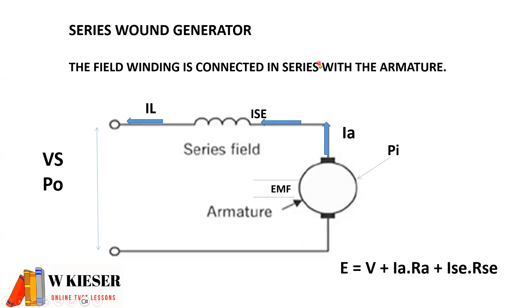For the series-wound generator, the field winding is connected in series with the armature. For a generator it's mechanical in and electrical out. For calculations involving efficiency, we use the output power. In a series circuit, current remains the same throughout. To calculate the EMF, it will be the terminal voltage plus IA times RA, plus the volt drop across the series winding which is ISE times RSE.